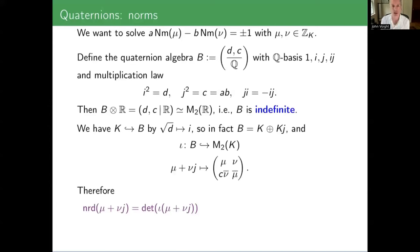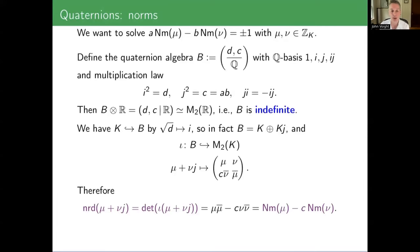The whole point of this is that you really are supposed to see a norm equation. The norm of μ plus νJ is the determinant of the 2×2 matrix — that's μ·μ̄ minus C·ν·ν̄, which is the norm of μ minus C times the norm of ν. That's almost the equation up there, and it will be once I multiply through by A.